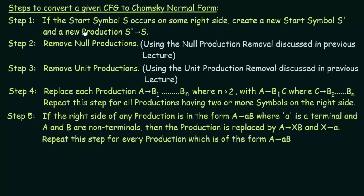Step 1: If the start symbol S occurs on some right side, create a new start symbol S' and a new production S' gives S. So if the start symbol occurs on the right side of some production, we create a new start symbol S' and also create a new production S' gives S. You have to perform this step if you have a start symbol on the right hand side of any of the productions.